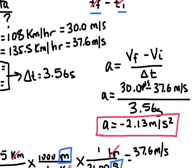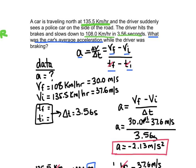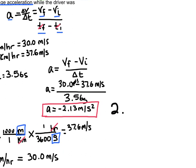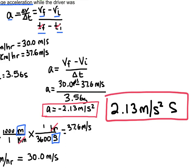You may be wondering how we can have a negative value. If you look back at the problem, the driver is actually slowing down, so a negative acceleration makes sense. If we define north as positive and south as negative — since the car was initially traveling north — the negative sign indicates the acceleration is directed southward. We could equivalently express it as 2.13 meters per second squared to the south. The negative sign is indicating direction.